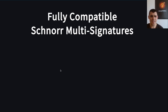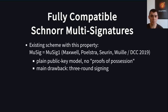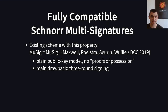If we look at existing schemes in the literature, one nice scheme with this property is MuSig, which we will call MuSig1 to distinguish it from our work. MuSig1 works in the plain public key model. Other multi-signature schemes typically require proofs of possession in their public keys to avoid rogue key attacks — signers need to prove in zero-knowledge that they know the secret key corresponding to their public key. The novelty of MuSig1 is to avoid this. But the main drawback of MuSig1 is that signing requires three rounds of communication.